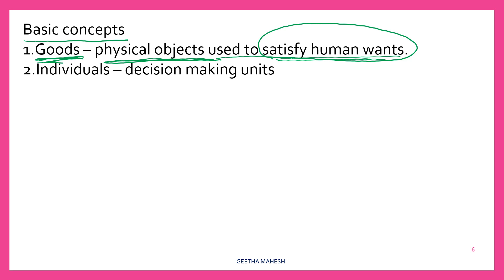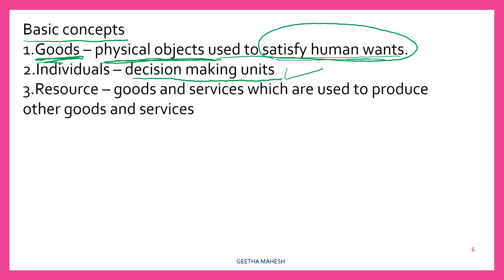Then, individuals. Who are individuals in economics? Individuals means individual decision-making units. The decision-making unit can be a single person or a group like a household, a firm, or any other organization. Next one is resources. In economics, resources means goods or services used to produce other goods and services. Examples: land, labor, tools, and machinery.